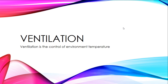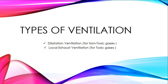Ventilation is the control of environmental temperature. There are two types of ventilation: dilution ventilation, which is used for non-toxic gases, and local exhaust ventilation, which is used for toxic gases.